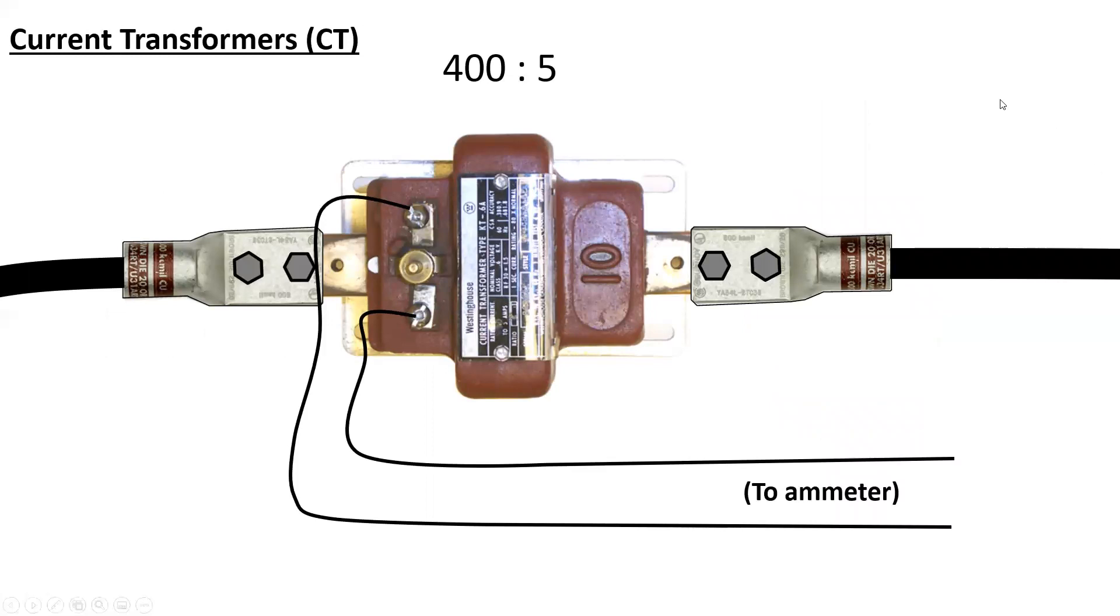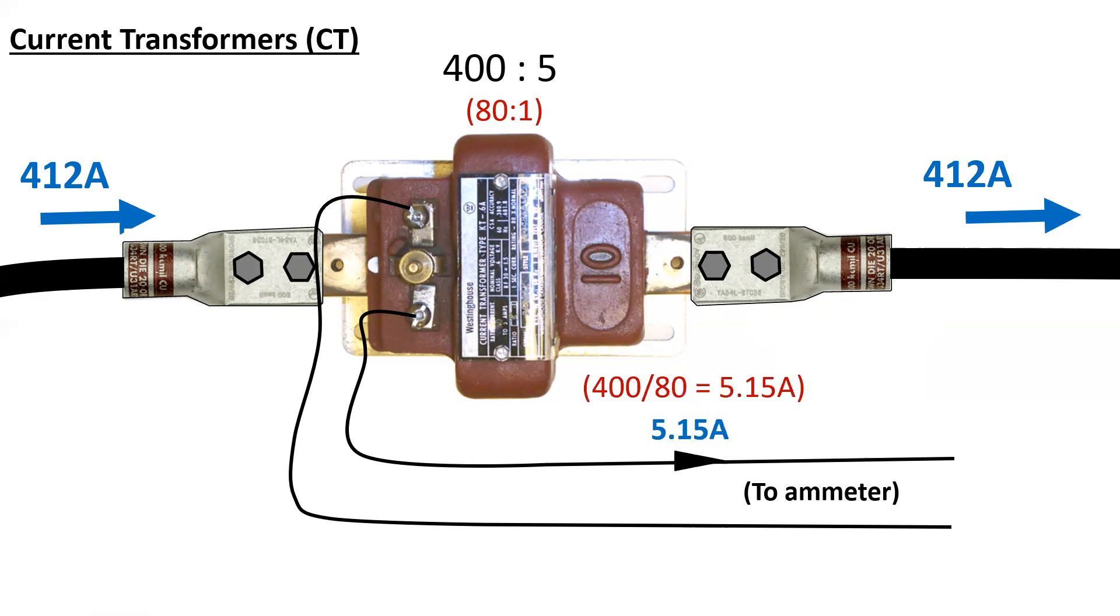So, here's a 400 to 5 CT. We've got large conductors here that are going to take all the line current all the way through, perhaps for a large service. A 400 to 5 means an 80 to 1 ratio. So, if we had a current value of 412 amps, how many amps would I expect to see on the secondary connecting off to an ammeter? Well, we would take our ratio and we would calculate 412 divided by 80, which gives me 5.15 amps. So, our ammeter would register 5.15 amps. And if I knew what the ratio was, I could multiply that and know exactly how many amps are flowing through the CT.